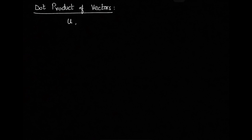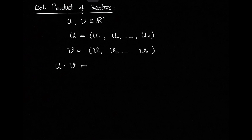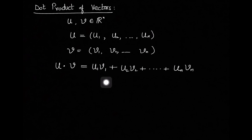Suppose you have two vectors u and v in Rn, meaning u and v each have n components: u1, u2, u3, ... un and v1, v2, ... vn. The dot product u·v gives a scalar number obtained by component-wise multiplication: u1·v1 + u2·v2 + ... + un·vn.